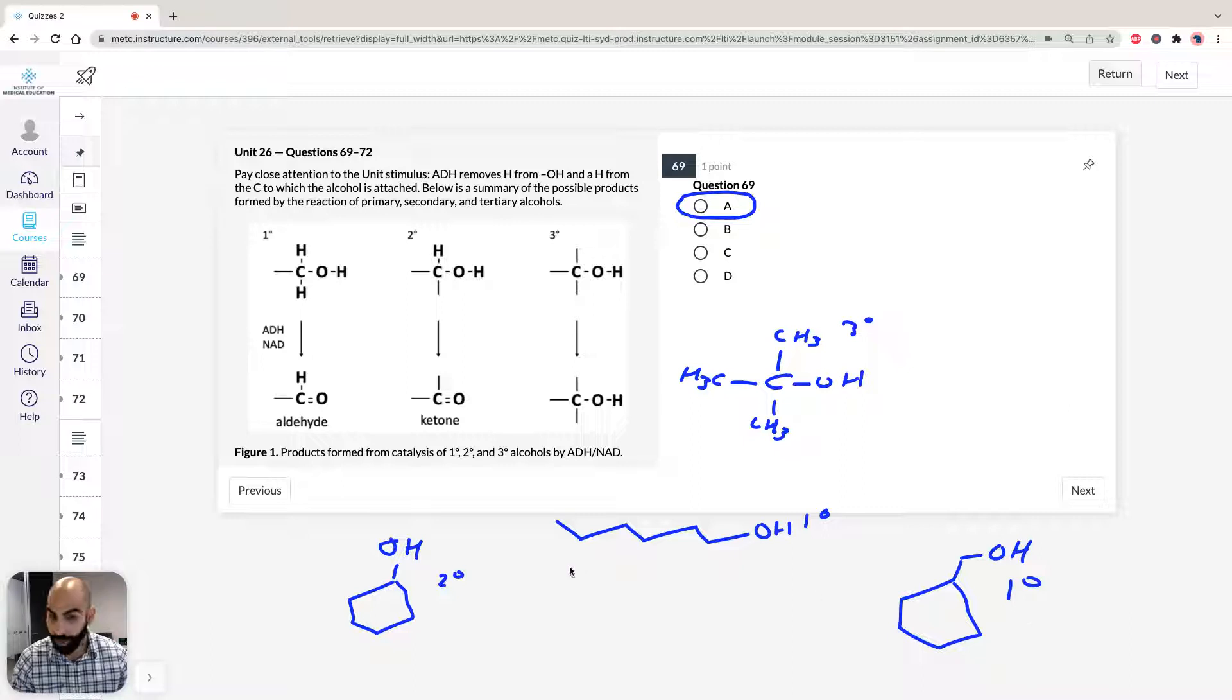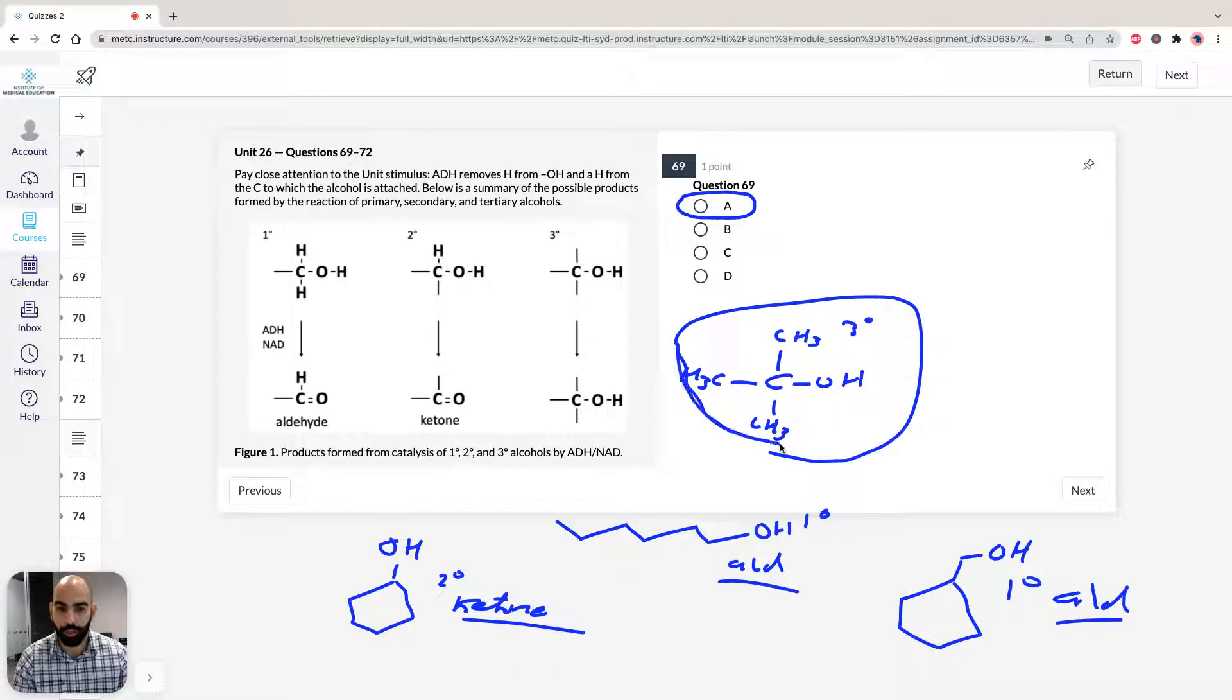What we know therefore is if we react these molecules with ADH and NAD, we're going to form here a ketone for the secondary alcohol, and we're going to form aldehydes for the primary alcohols. The answer for 69 therefore has to be A, because the tertiary alcohol cannot react in the presence of ADH and NAD.